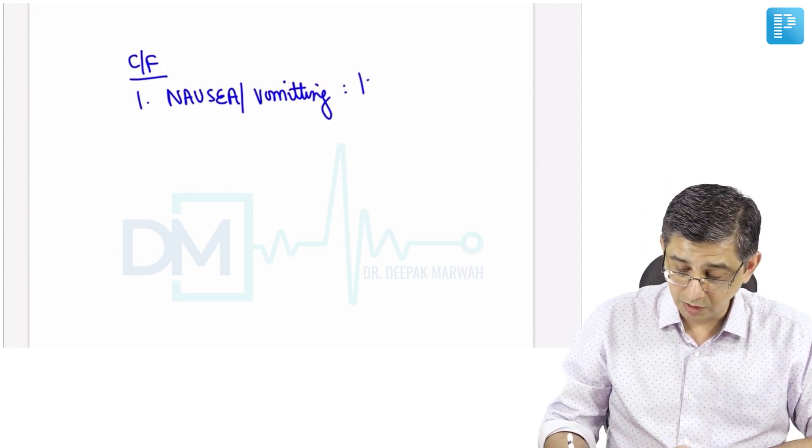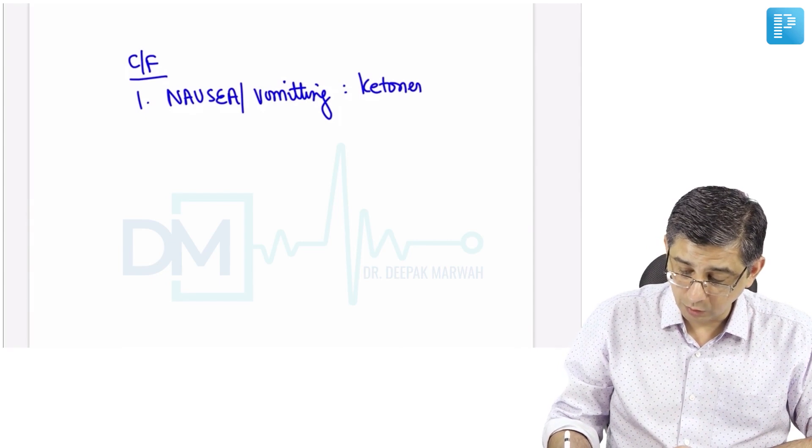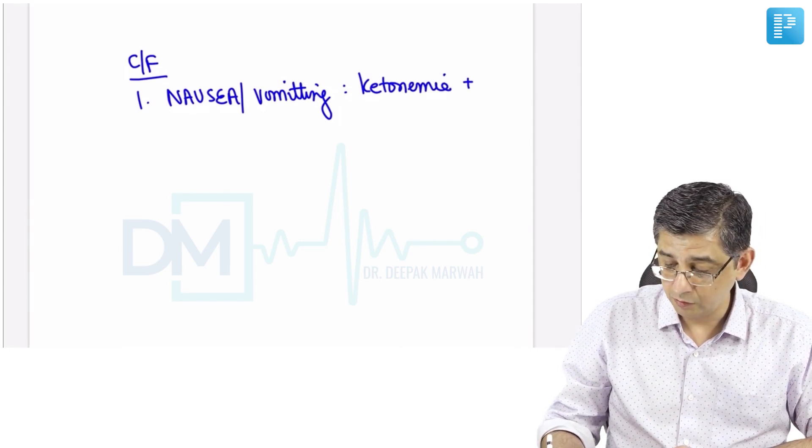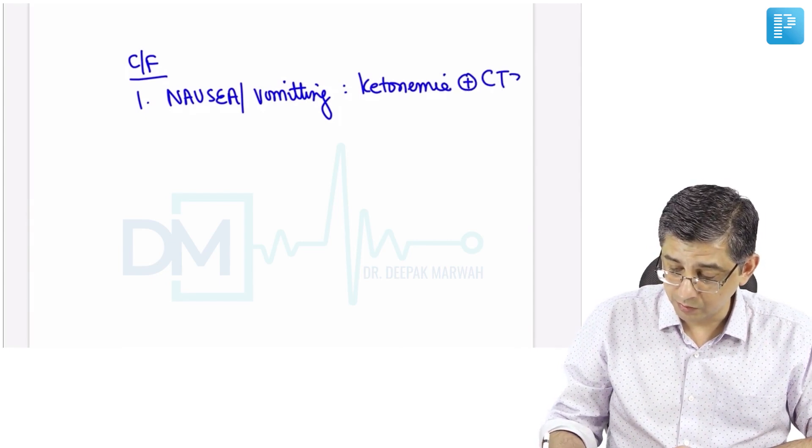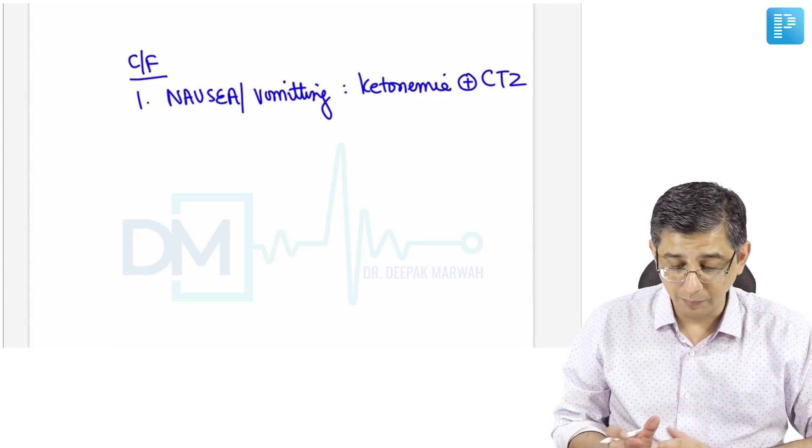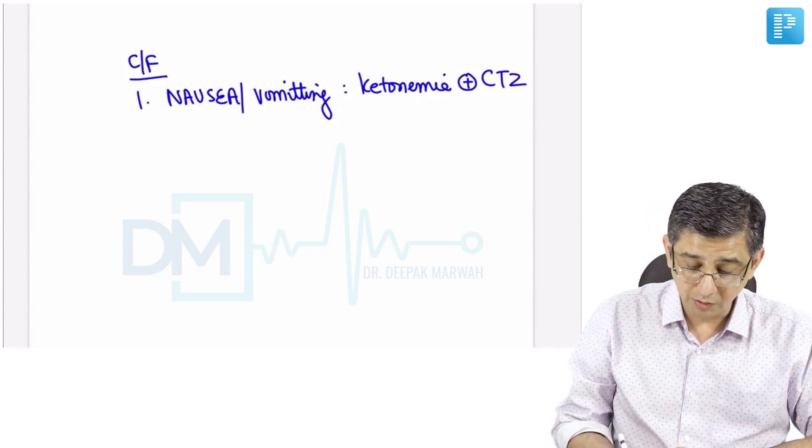The ketones which are elevated in the body of this patient (ketonemia) will trigger the vomiting center chemoreceptor trigger zone, and therefore protracted vomiting is seen causing fluid depletion and dehydration in the patient.